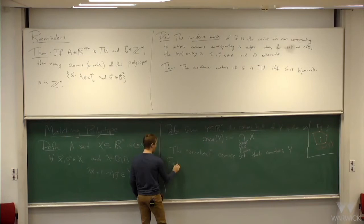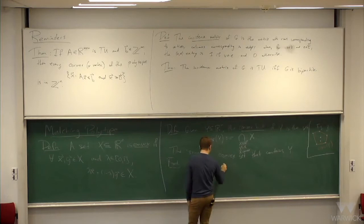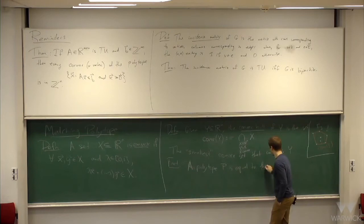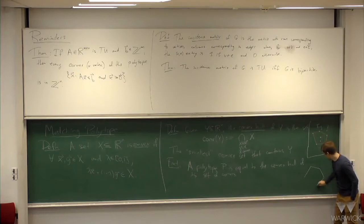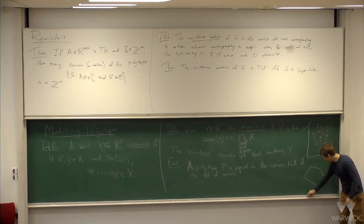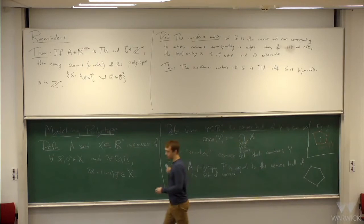Here is a basic fact about polytopes: a polytope P is actually equal to the convex hull of its set of corners. Geometrically, you can sort of see why this might be true. Polytopes look like something like this, and if you take the polytope and take its corners, then take the convex hull of those corners, you get the polytope back again.